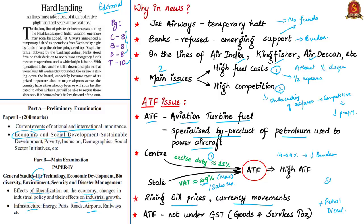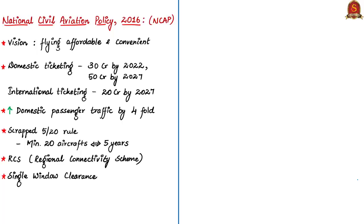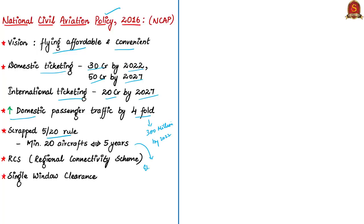In this context, the National Civil Aviation Policy of 2016 becomes important. Its vision is to make flying affordable and convenient and to drive significant growth in the civil aviation sector. It aims to increase domestic ticketing to 30 crore by 2022 and 50 crore by 2027, international ticketing to 20 crore by 2027, and increase domestic passenger traffic fourfold to 300 million by 2022. A salient feature is the scrapping of the 5/20 rule — which required local airlines to have a minimum fleet of 20 aircraft with at least five years of operational experience before flying overseas — to create a level playing field. It also aims for a single window clearance system for all aviation-related transactions and introduced the Regional Connectivity Scheme (RCS).